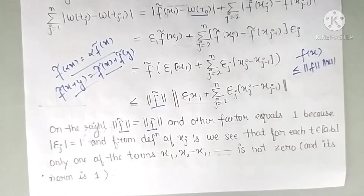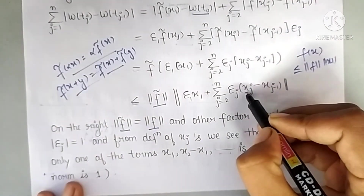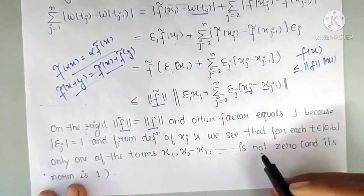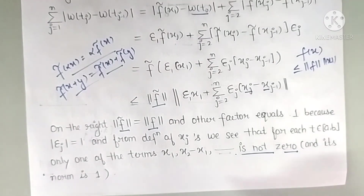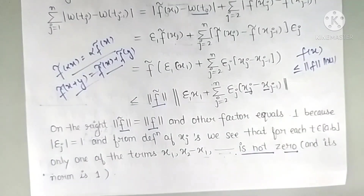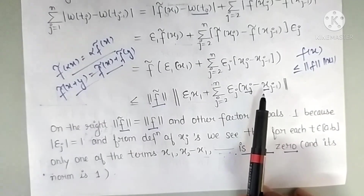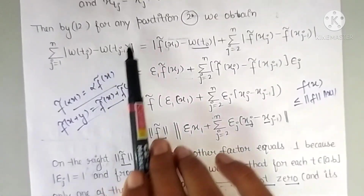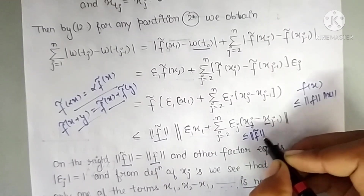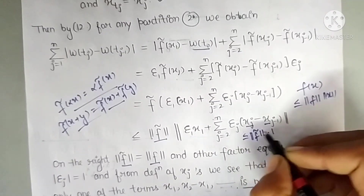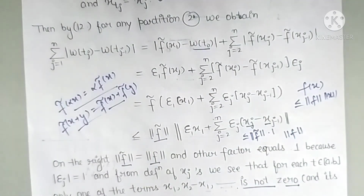On the right side, by the Hahn-Banach theorem, ||F̃|| = ||F||. The norm of the second factor equals 1: each εj has modulus 1, and from the definition of xj as a characteristic function (values 0 or 1), exactly one term xj − x(j−1) is nonzero and equals 1 at any given time. Therefore the entire sum is ≤ ||F||. We will continue the remaining part of this theorem in the next lecture. Thank you, class.